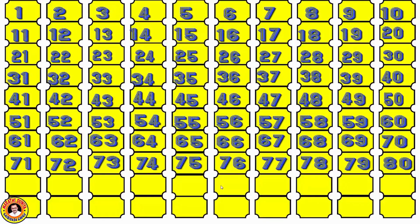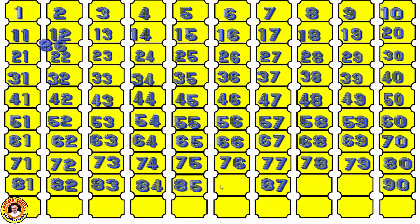Now next line: the given numbers are 81, 84, 87, and 90, and the remaining numbers are 82, 83, 85, 86, 88, and 89. We complete the line from 81 to 90.